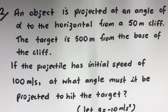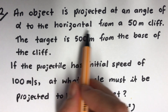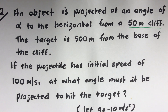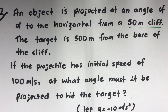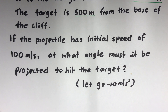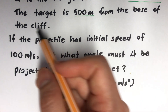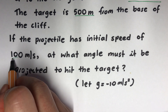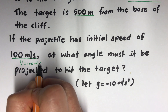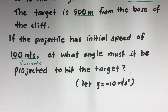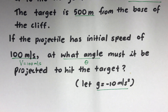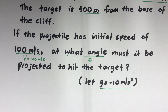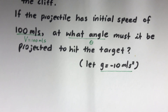Question 2: an object is projected at an angle of alpha to the horizontal from a 50-metre cliff. The target is 500 metres from the base — that's the range. The projectile has initial speed V equals 100 metres per second. We need to find the angle of projection required to hit the target. Gravity is taken as negative 10 here. This will be a long process.